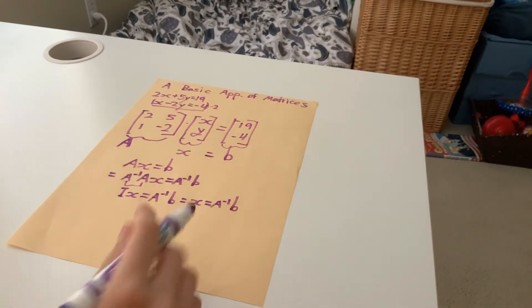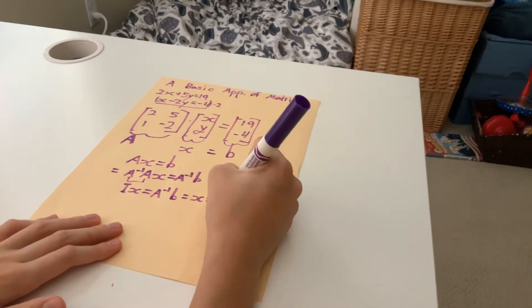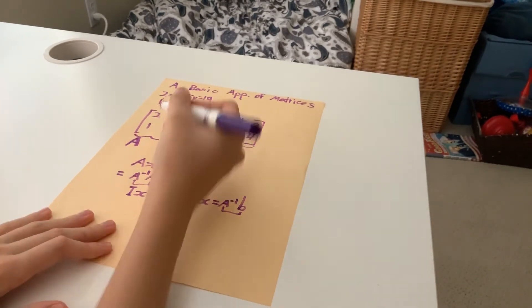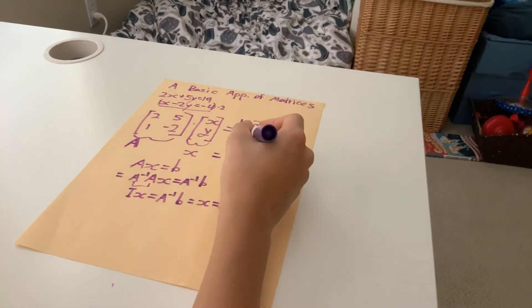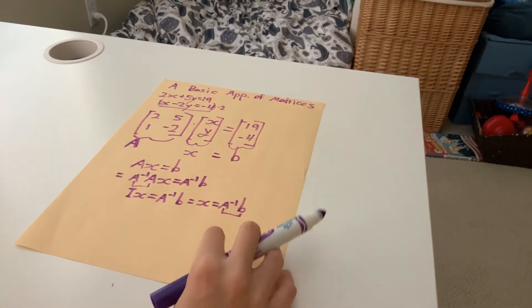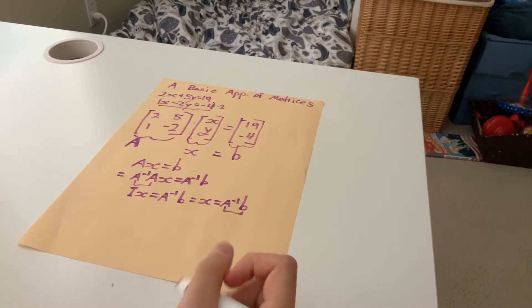So now this simplifies to the identity matrix times x equals A inverse times b. Identity matrix times any other matrix is equal to that same matrix. So it's just equal to x equals A inverse times b. So now to find x, we just find the inverse of this matrix and multiply that by b, 19 and negative 4. So let's do that real quick.